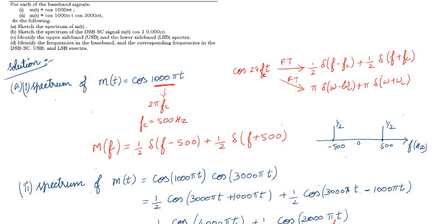Hi and hello to everyone. In this video we are going to discuss a problem about sketching the spectrum of the message signal m(t), as well as the double sideband suppressed carrier (DSB-SC) signal, which is the product of the message signal with a carrier signal cos(10000πt).